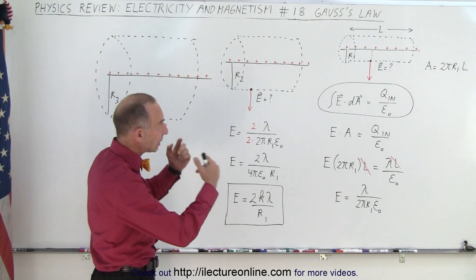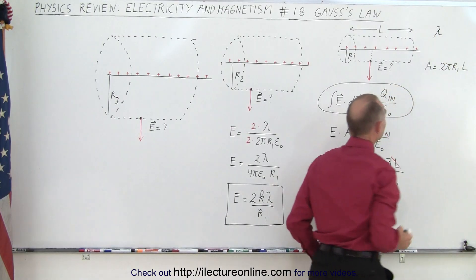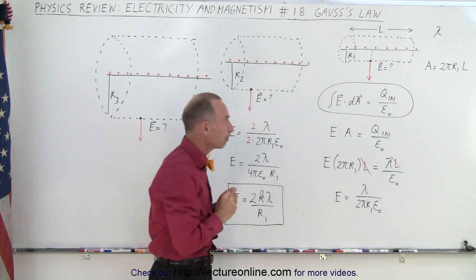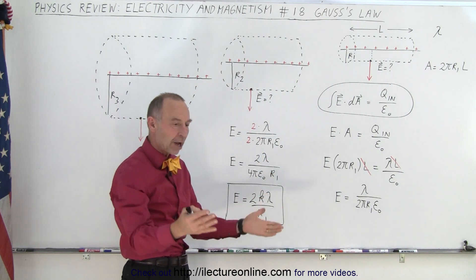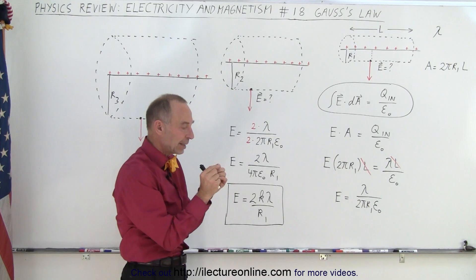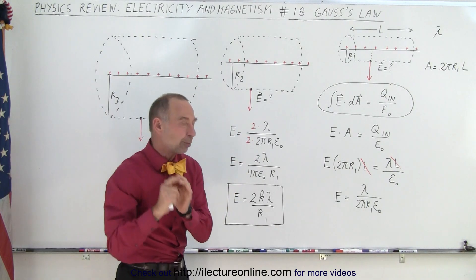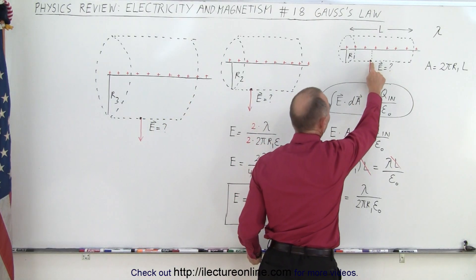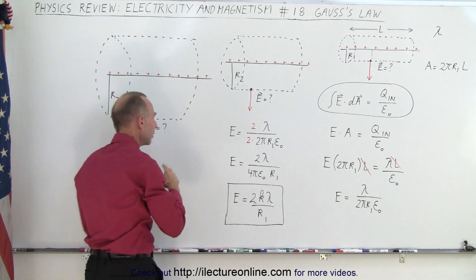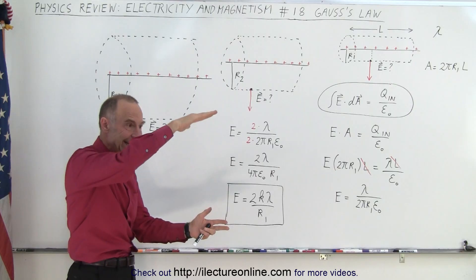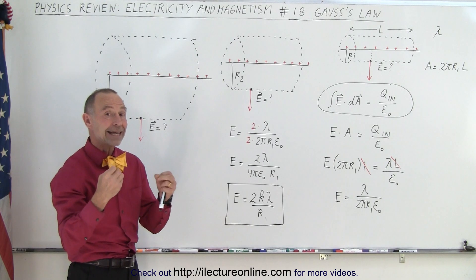Let's start with a linear charge distribution where the charge distribution can be represented by lambda. A Gaussian surface is simply an imaginary surface drawn around the charge distribution in such a way that the side of the Gaussian surface goes right through a point of interest. If I want to find the electric field at this point right here, or further away, I simply draw the Gaussian surface so that the side goes right through the point of interest — and that's the key.